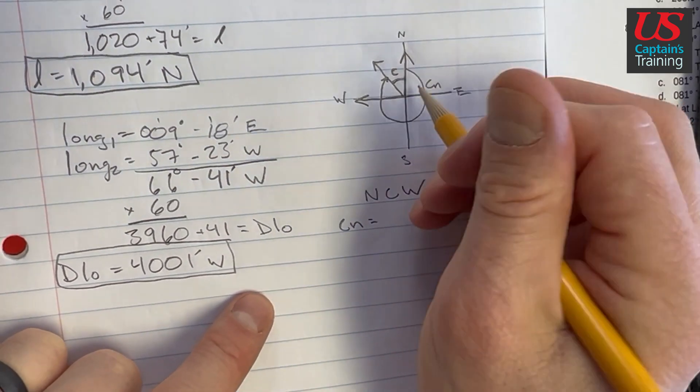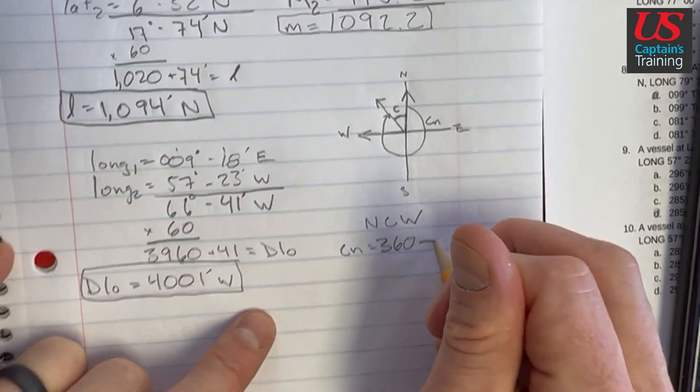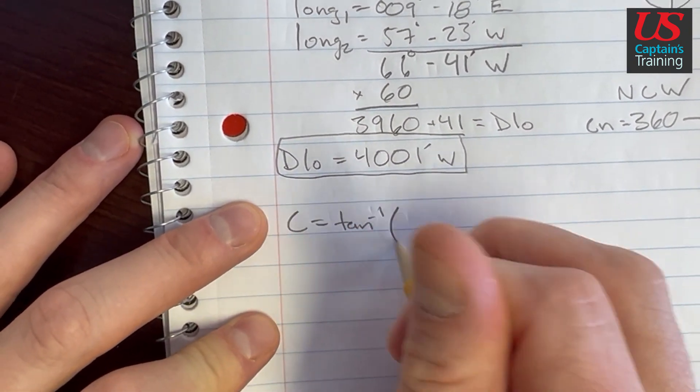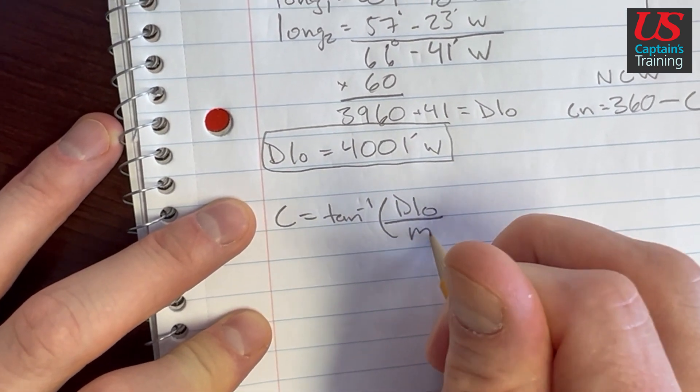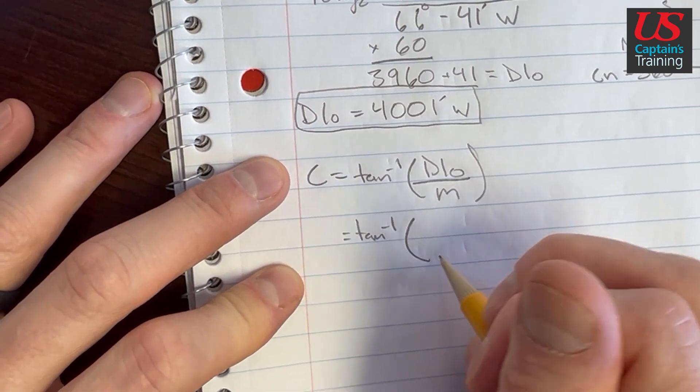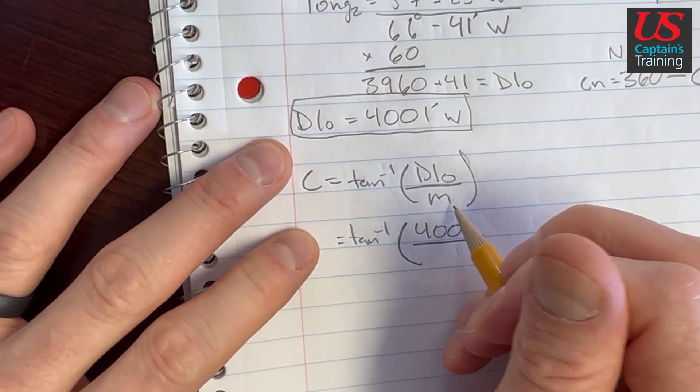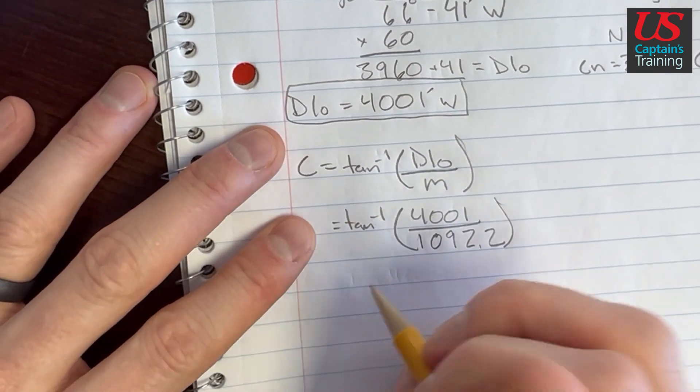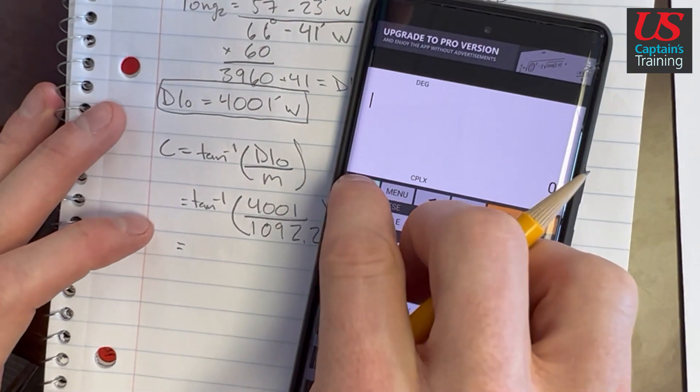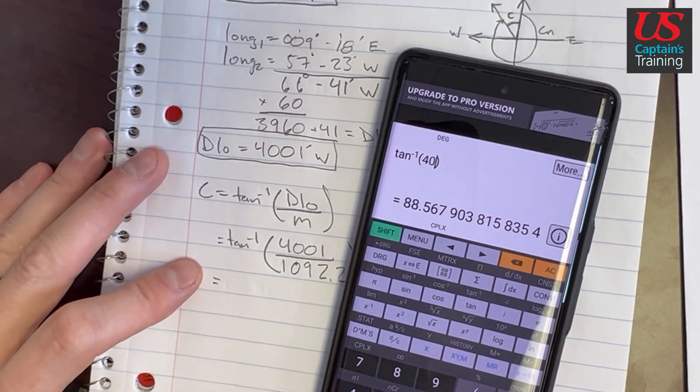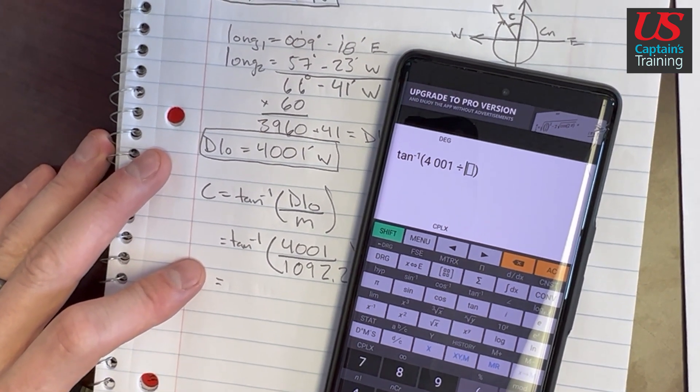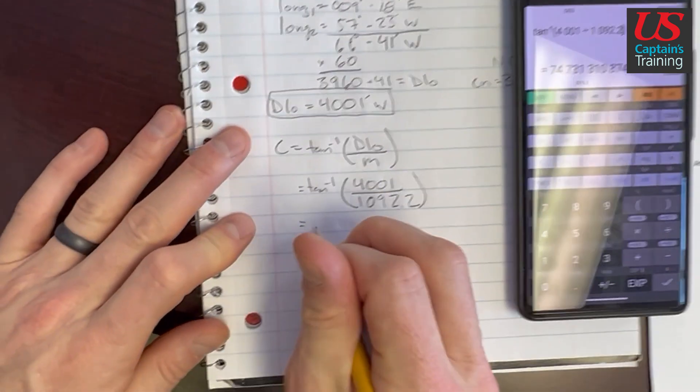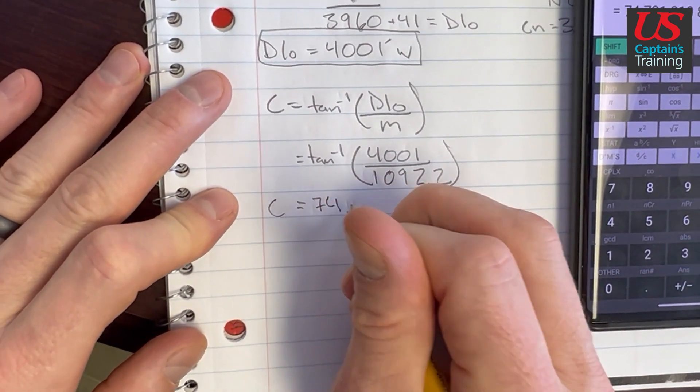So we're looking at north course west. So CN is going to equal 360 minus C. Now we can find C. C is equal to tan inverse of D low over M. So it's tan inverse, D low is equal to 4,001, M is equal to 1,092.2. C equals 74.731.